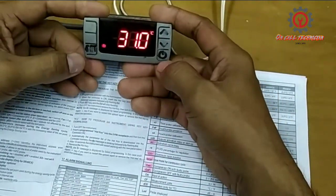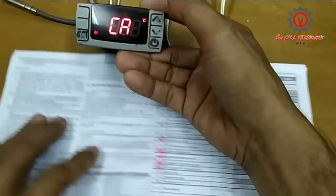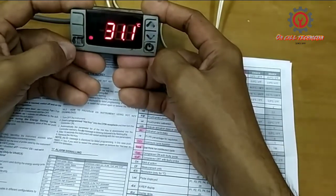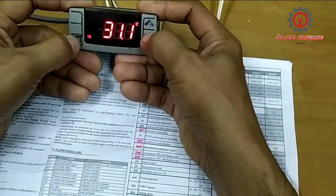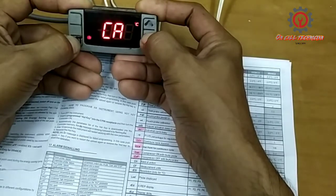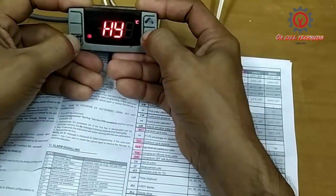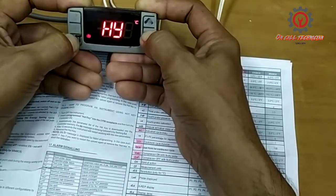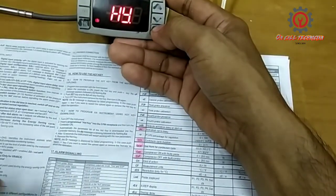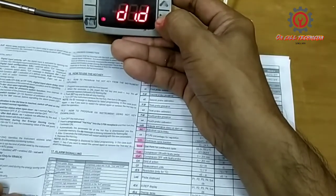Let's proceed to the parameter i1f. To enter the programming mode, just press the set and arrow down button at the same time for 3 seconds. Press the set button and arrow down button for 7 seconds to enter the hidden parameter. Next, we're going to locate the i1f parameter.